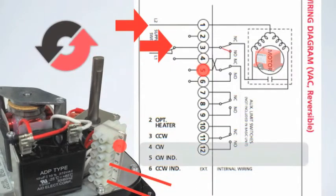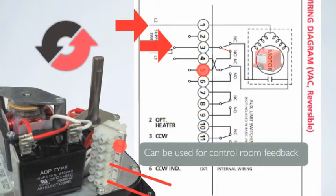When counterclockwise rotation reaches 90 degrees, contact where the internal limit switch is made and it will throw power to Terminal 5. This will indicate that the valve is in the open position and can be used for control room feedback.